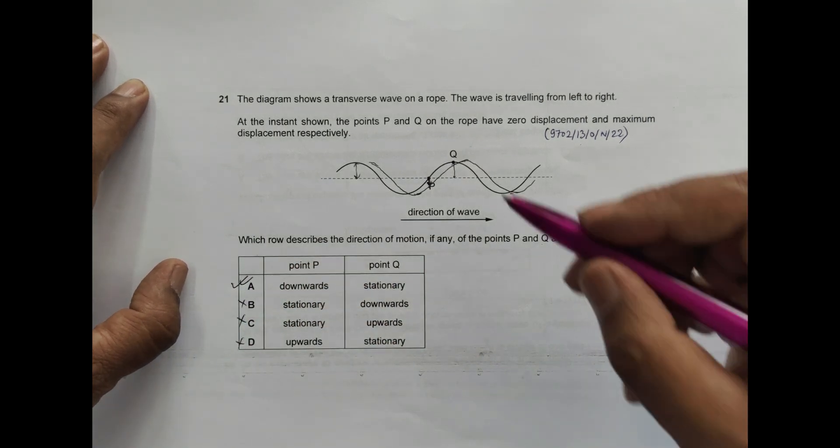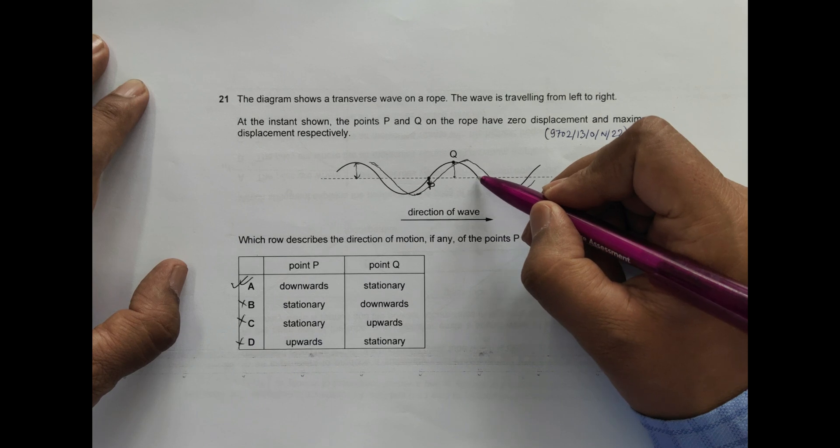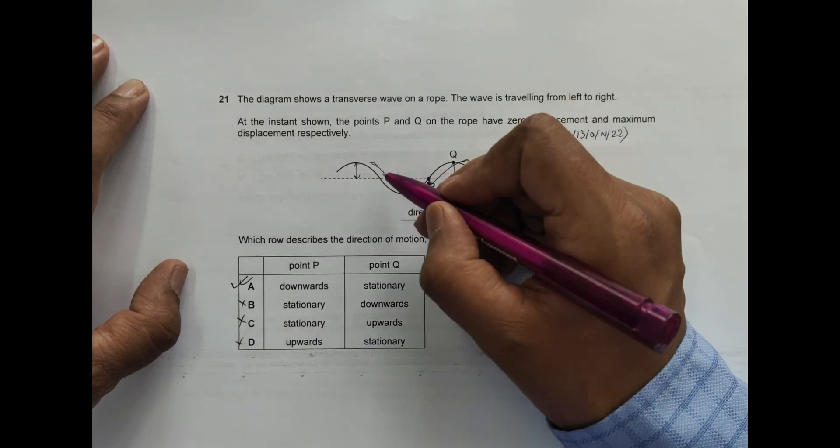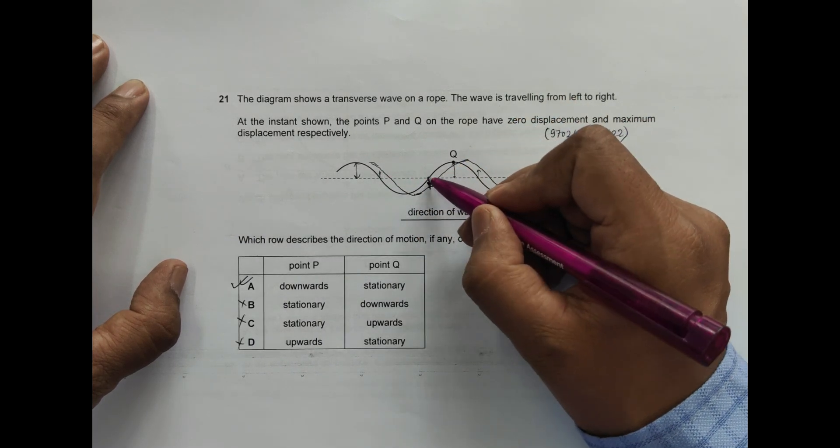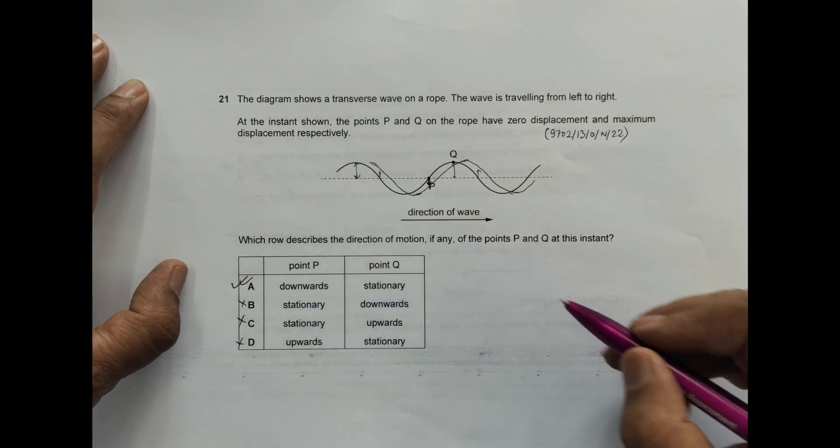So this choice should be the correct choice and this is the wrong choice. If I go through this point it is going up, if I go to this point it is going up, but point P it was going down. So this is the correct choice.